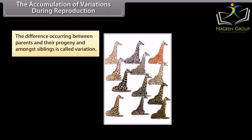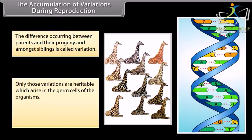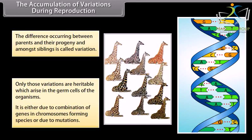The accumulation of variations during reproduction: the difference occurring between parents and their progeny, and amongst siblings, is called variation. Only those variations are heritable which arise in the germ cells of the organisms. This is either due to combination of genes in chromosomes, forming species, or due to mutations.